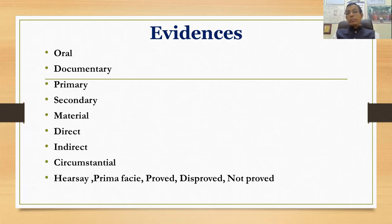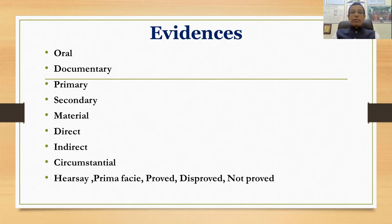The different types of documentary evidence are: primary, secondary, material evidence, direct evidence, indirect evidence, circumstantial evidence, hearsay evidence, prima facie evidence, proved, disproved, and not proved. We will now see each one in detail.